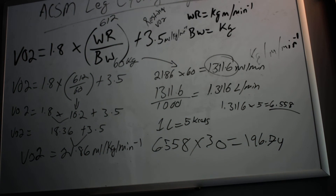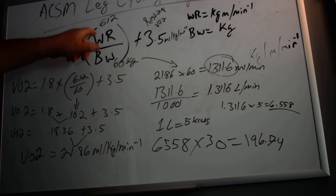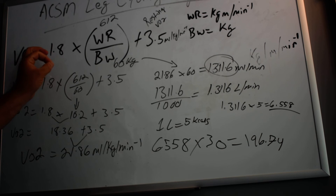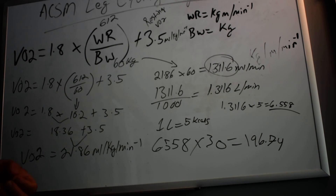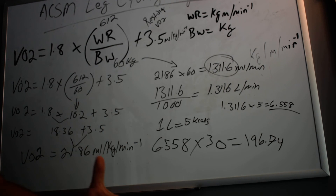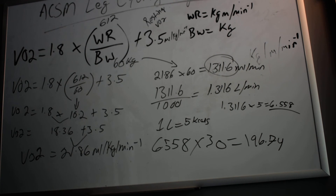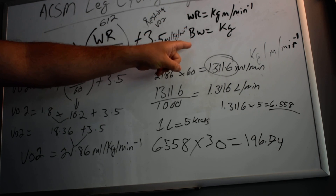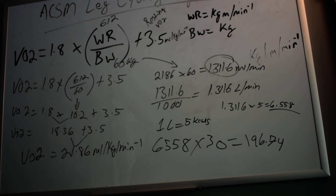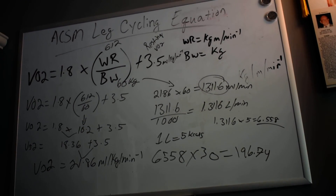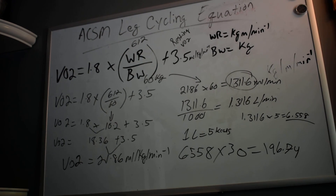For those taking the exam: the equation itself — 1.8 times work rate and so on — will be given to you, so you don't need to memorize it. However, conversion factors will not be given. They'll assume you know how to convert watts to kilogram meters per minute and body weight in pounds to kilograms. I'll cover those conversions in the next example of the ACSM leg cycling equation when the information isn't already in the required format.